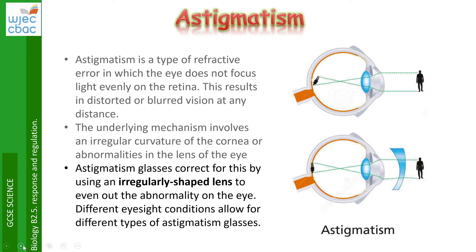The underlying mechanism involves an irregular curvature of the cornea or abnormalities in the lens of the eye. Astigmatism glasses correct this by using an irregularly shaped lens to even out the abnormality, and different eyesight conditions allow for different types of astigmatism glasses.